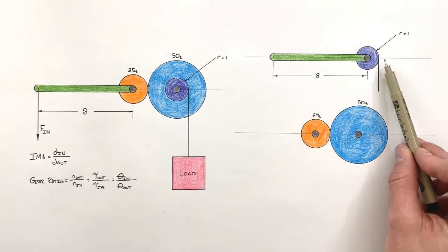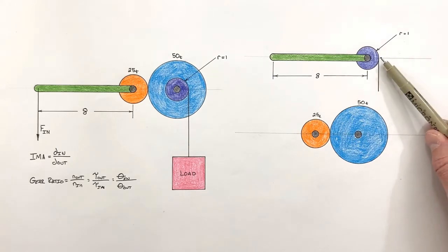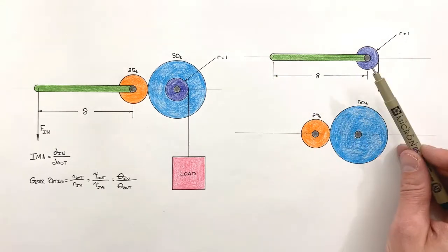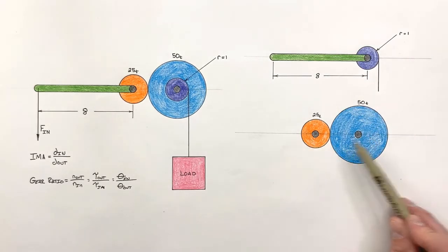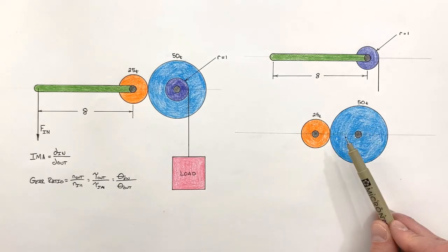We've got an input side and an output side and the string connected to the load here. I drew attached right there. So we can treat this just as a simple first class lever. Then separately down here, we have our gear train. This is a simple gear train. We've got a 25 tooth gear driving a 50 tooth gear.